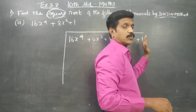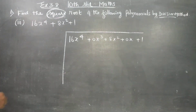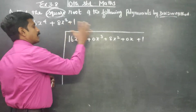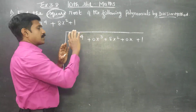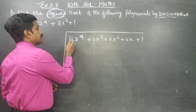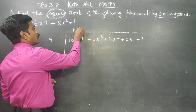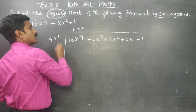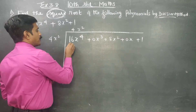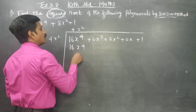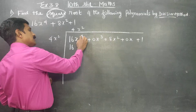The descending order goes: power 4, 3, 2, 1, constant. To find the square root of the sum, divide using the division portion. 16x power 4 — the square root of 16 is 4, so the first term is 4x square, because x square times x square equals x power 4, and 4 times 4 is 16.